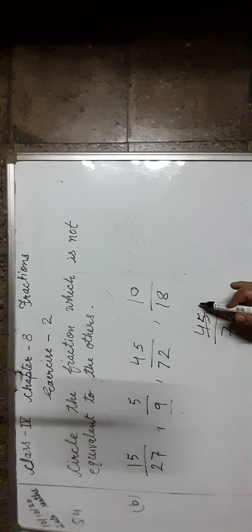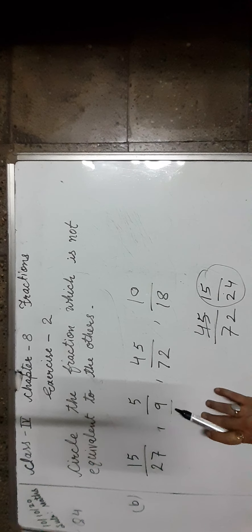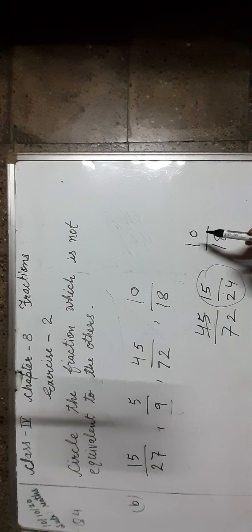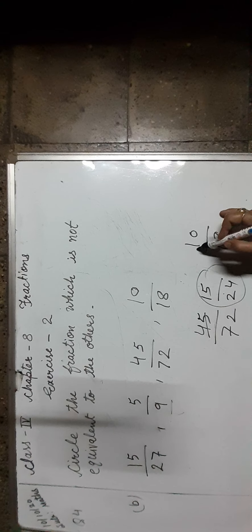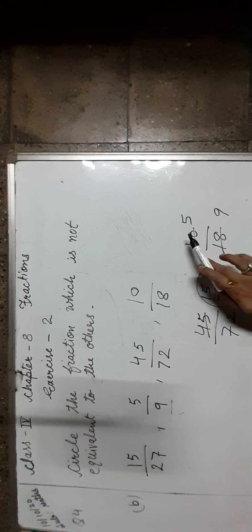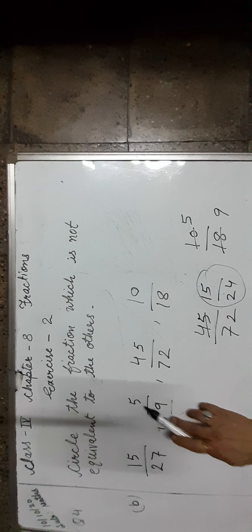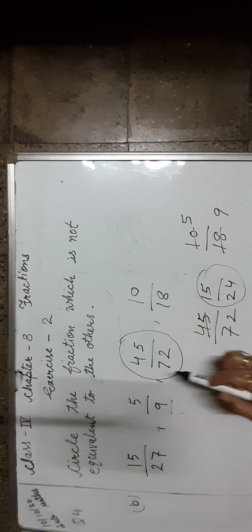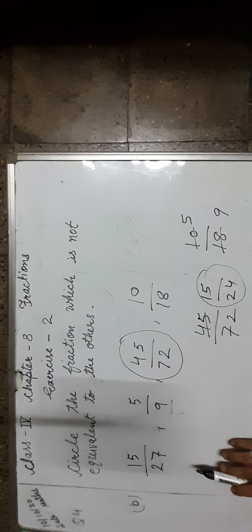Now let us check the next fraction, 45 upon 72. Check the divisibility of 45 and 72 by the same number. If we cancel by 3, we will get 15 and 24, which is not equivalent to 5 upon 9. Now let us check the last fraction, 10 upon 18. Check the divisibility of 10 and 18 by the same number. If we cancel by 2: 2 fives are 10, 2 nines are 18. We get 5 upon 9. So, 45 upon 72 is not equal to the other fractions.